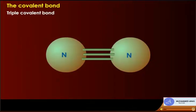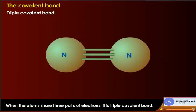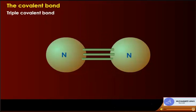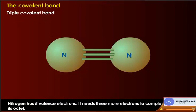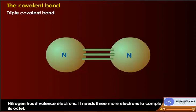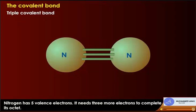Triple covalent bond: when atoms share three pairs of electrons, it is a triple covalent bond. For example, nitrogen molecule. Nitrogen has five valence electrons and needs three more to complete its octet. It shares three electrons with another nitrogen atom to form a triple covalent bond, shown by a triple line.